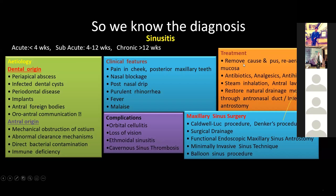When medication does not work and the acute phase becomes subacute and goes into chronicity, that is the time we think about surgery. The first line of treatment is always medical; when it becomes refractive to repeated medical interventions, we need to go in and regain the normal physiology of the sinus. Surgical options range from caldwell-luc surgical drainage and functional endoscopic maxillary sinus surgeries to balloon sinus procedures.